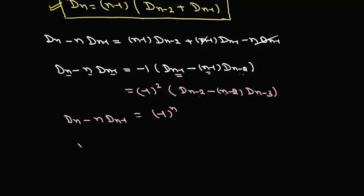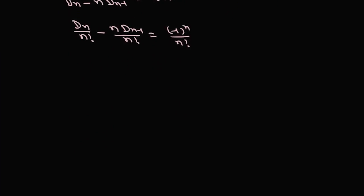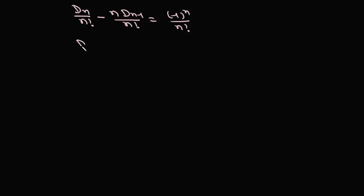Dividing everything by n!, we get D(n)/n! - D(n-1)/(n-1)! = (-1)^n / n!. This is a telescoping relation where each step reduces the index by one in the same form.